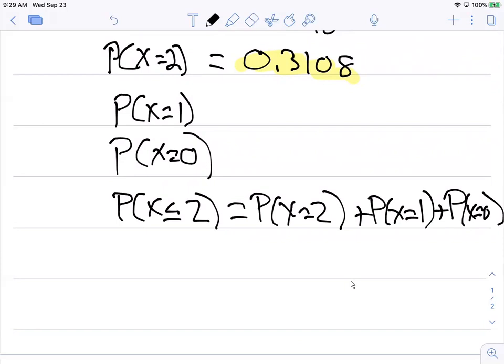When you do these other ones, it turns out the probability that X equals zero will get you 0.2812, or that's the probability that X equals one. The probability X equals zero is 0.1113.